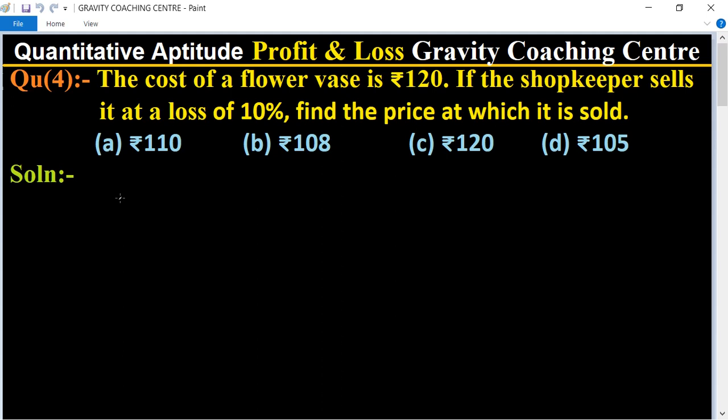Profit and Loss, Question number 4. The cost of a flower vase is Rs. 120. If the shopkeeper sells it at a loss of 10%, find the price at which it is sold.